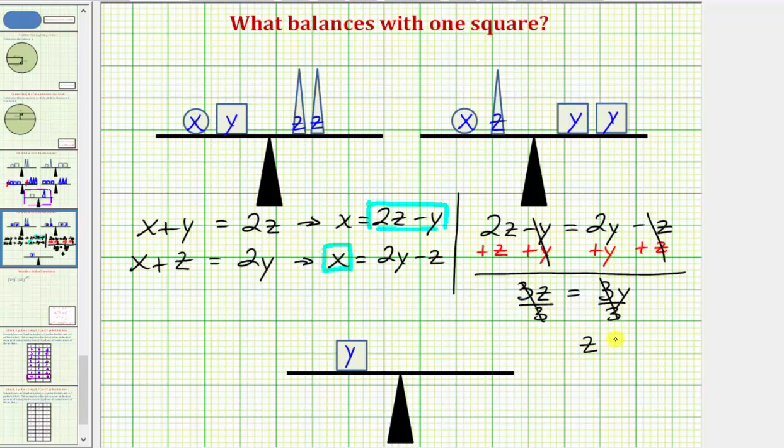Notice how we have z equals y, or if we want, y equals z. And because y equals z, and y is a square and z is a triangle, once again we know that one triangle balances with one square.